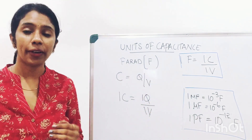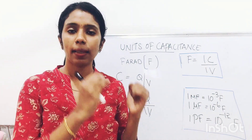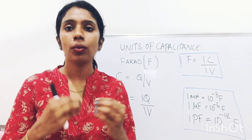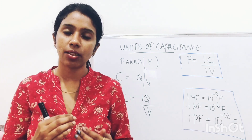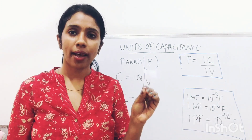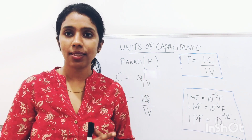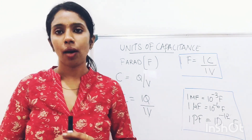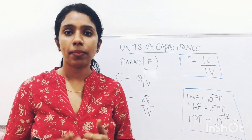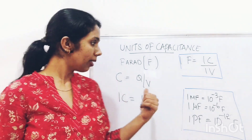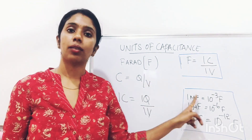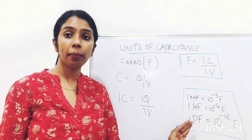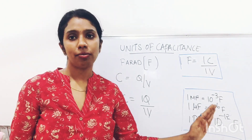From this equation, we can define 1 Farad: if the capacitance of a conductor is 1 Farad, then 1 Coulomb of charge is required to raise its potential by 1 Volt. Farad is a large unit, so for practical purposes we use sub-multiples: 1 millifarad = 10⁻³ F, 1 microfarad = 10⁻⁶ F, and 1 picofarad = 10⁻¹² F.